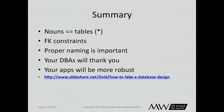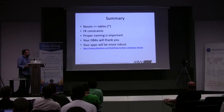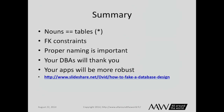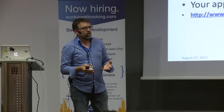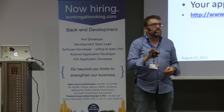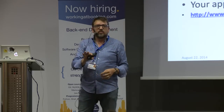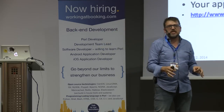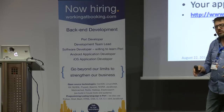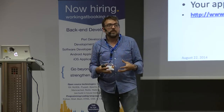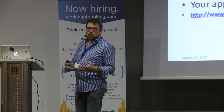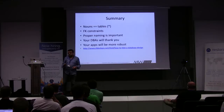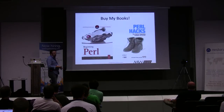So in summary: nouns more or less equal tables, unless the noun wholly belongs to another table (like directions belonging to a recipe). Don't forget your foreign key constraints. Proper naming is very important — your DBAs will thank you. Your databases won't be perfect, but they'll be much better than the vast majority. The standard test I give requires a minimum of five tables to be normalized correctly — almost every developer has three or fewer. Your apps will be more robust as a result.